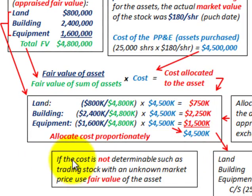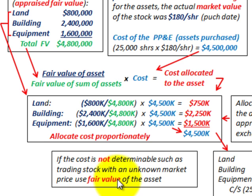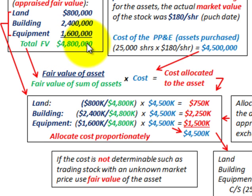In this case we exchanged stock for these assets, but in some cases the cost is not determinable — such as trading stock at an unknown market price. When there's an unknown market price on the stock, you would use the fair value of the asset itself as the allocated cost. You can see this through the multiplication: if you substitute $4,800,000 as the cost, it cancels out the fractional amount, and the allocated cost is simply the appraised fair value of each asset.